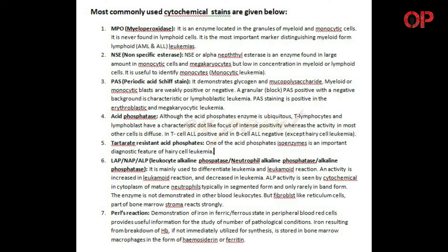7. Pearl's reaction - demonstration of iron in ferric or ferrous state in peripheral blood red cells provides useful information for the study of a number of pathological conditions. 8. Iron resulting from breakdown of hemoglobin, if not immediately utilized for synthesis, is stored in bone marrow macrophages in the form of hemosiderin or ferritin.